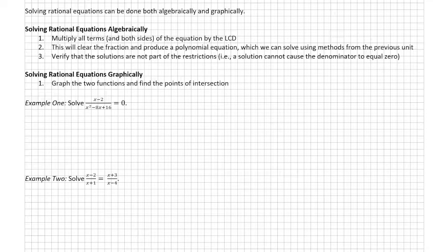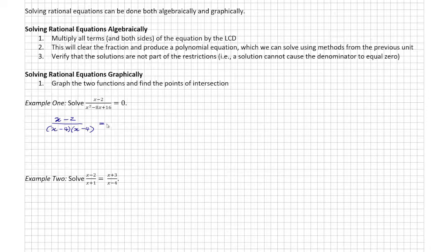I factor the denominator and I'm left with x minus 2 all over x minus 4 squared. I get this because I look for two numbers that multiply to positive 16 and add to negative 8. Now that this is in factored form, I'm able to state my restriction: x cannot be equal to positive 4.